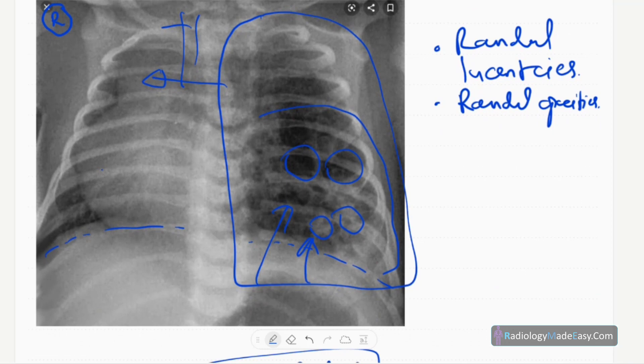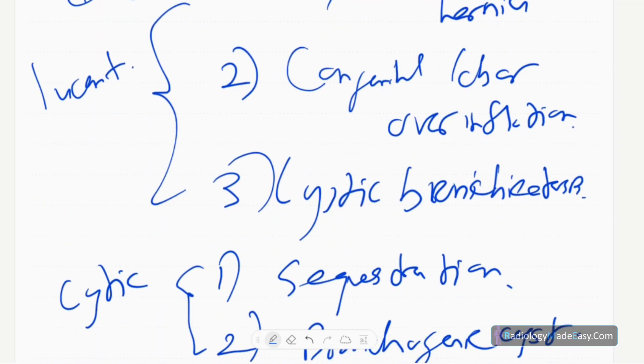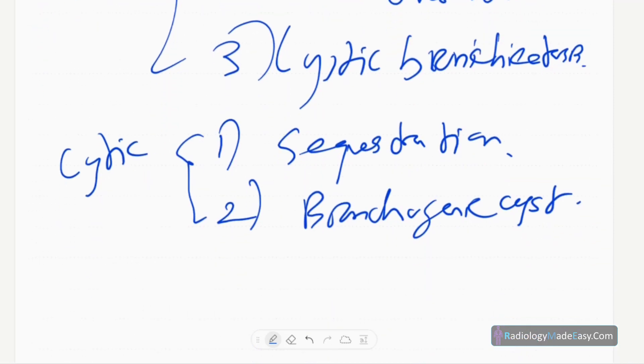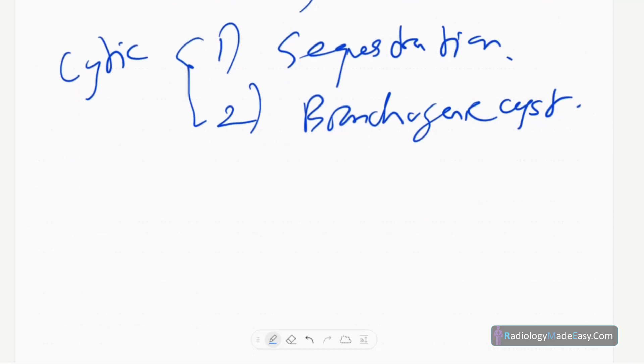CPAM is a congenital deformity with lucencies. These rounded lucencies can be filled with fluid, so there are air components as well as fluid components. As I mentioned before, if there is air component only, these are the differential diagnoses. If there are cystic or solid components, these are the differential diagnoses.